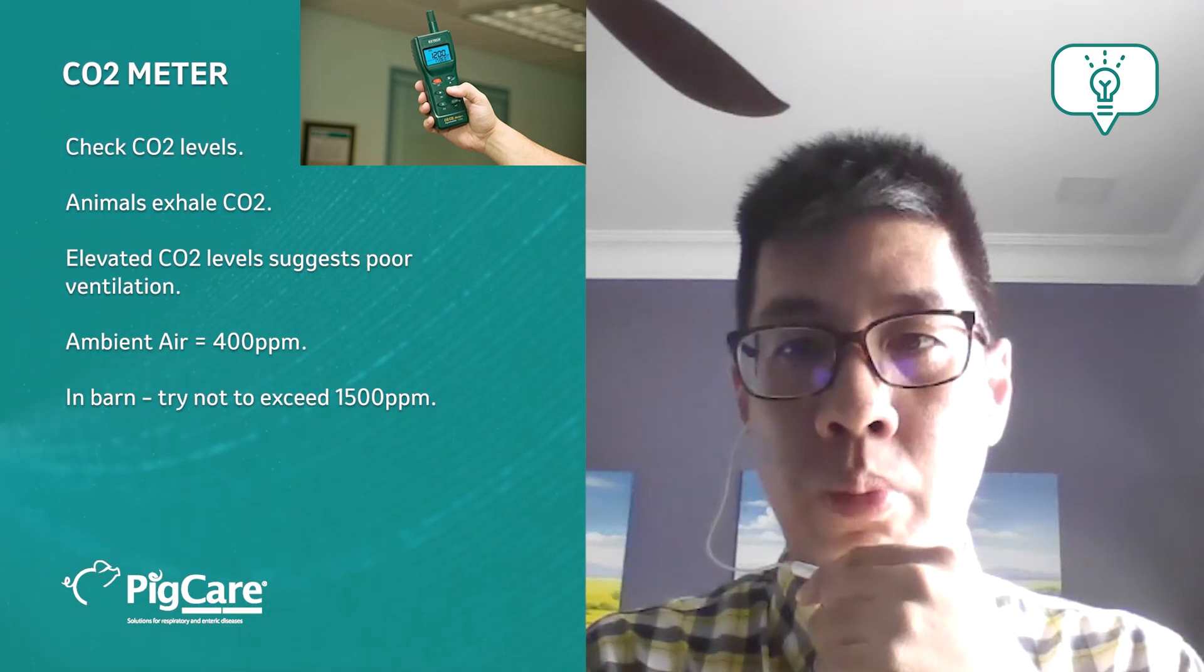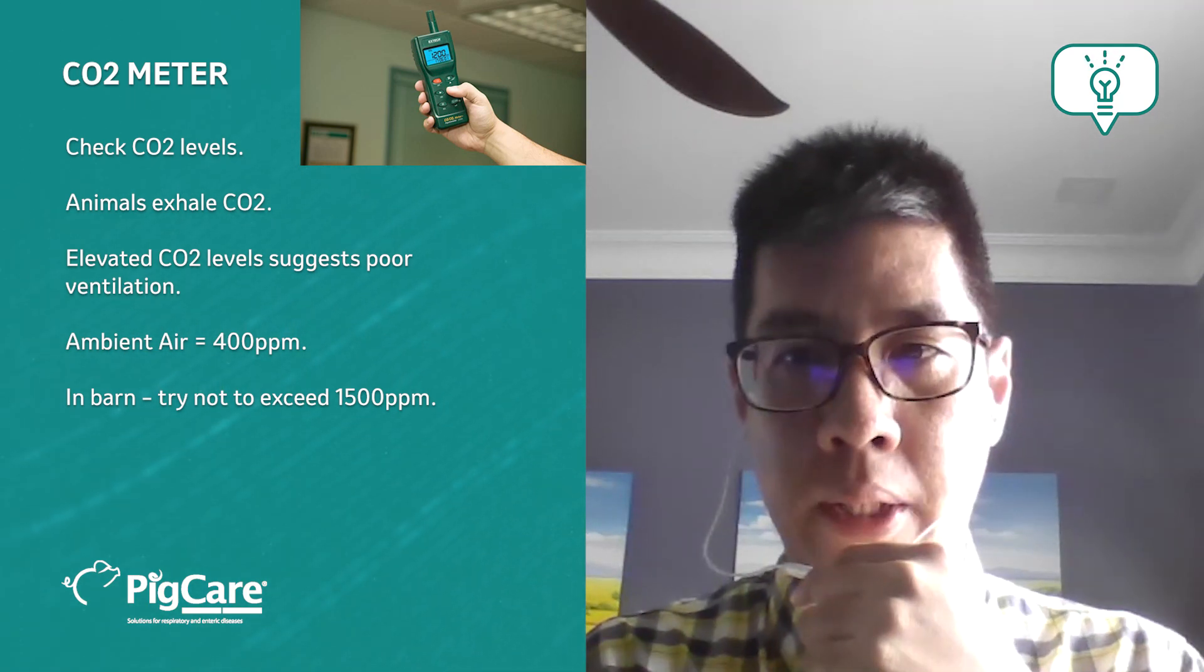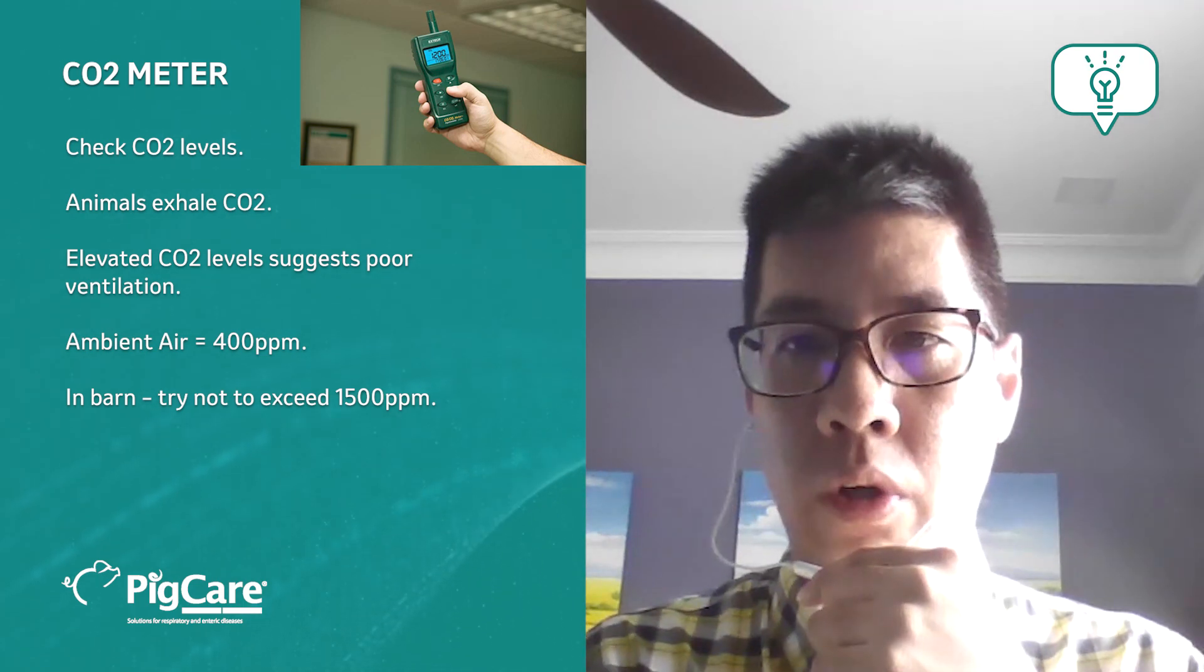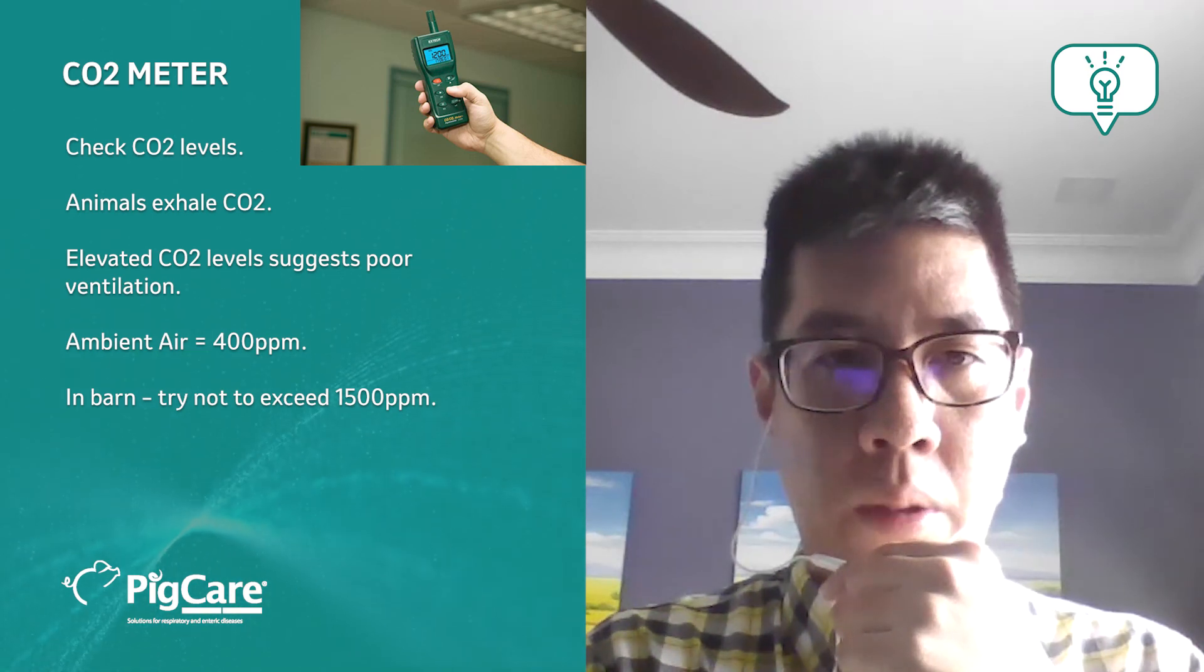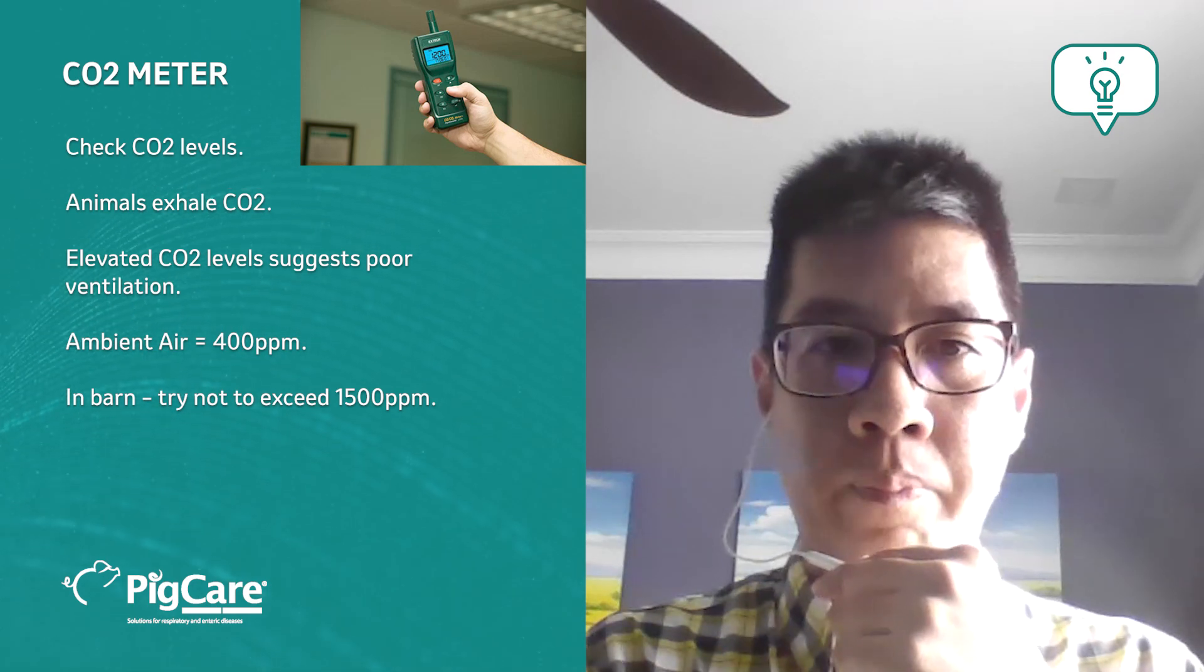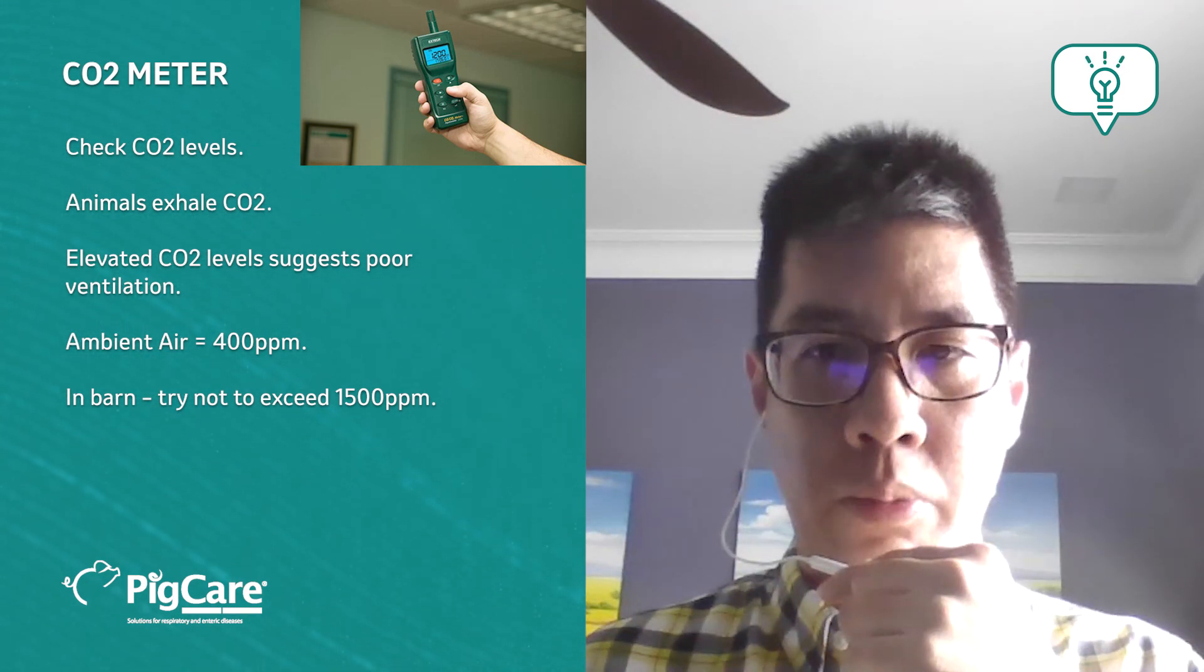When we use a CO2 meter, we need to know what the baseline is. Normally for a baseline, we would use the ambient air concentration of 400 ppm. In general, in the barn, we would try not to exceed 1500 ppm. The higher the level, the more CO2 has built up.